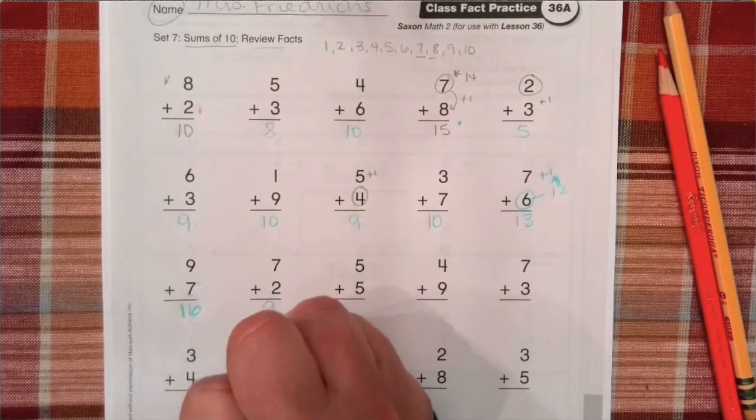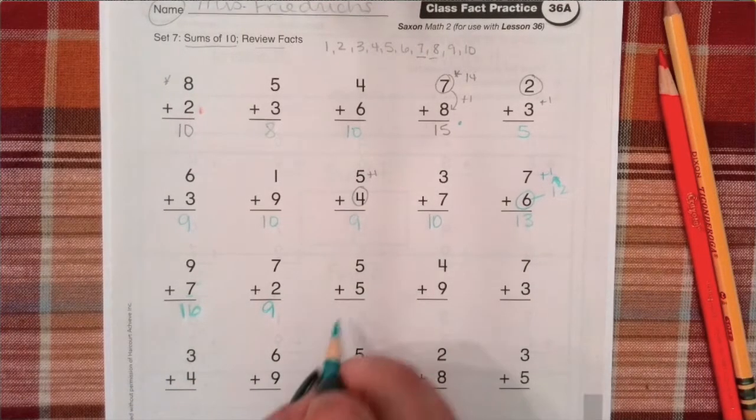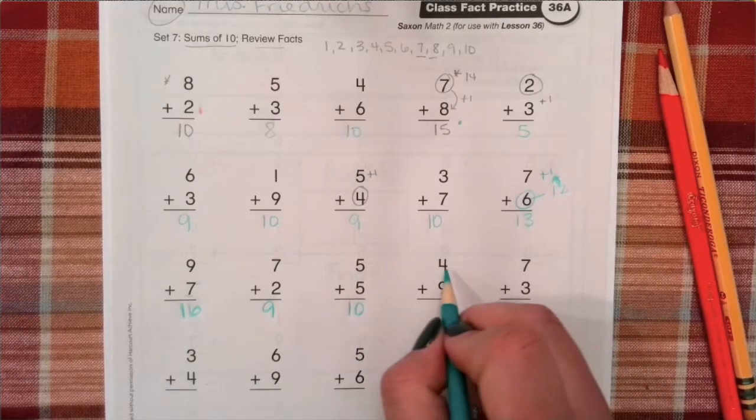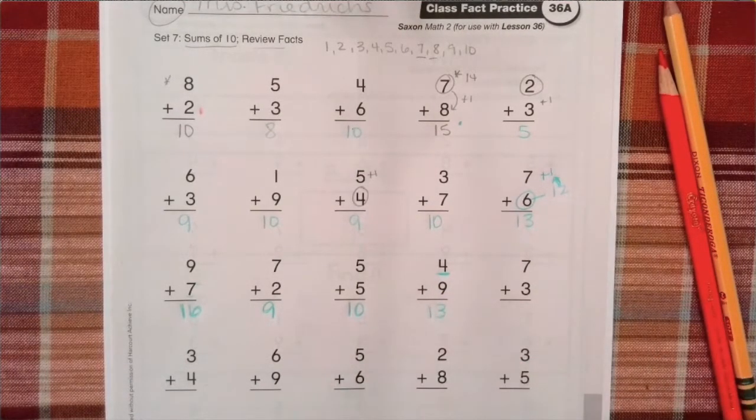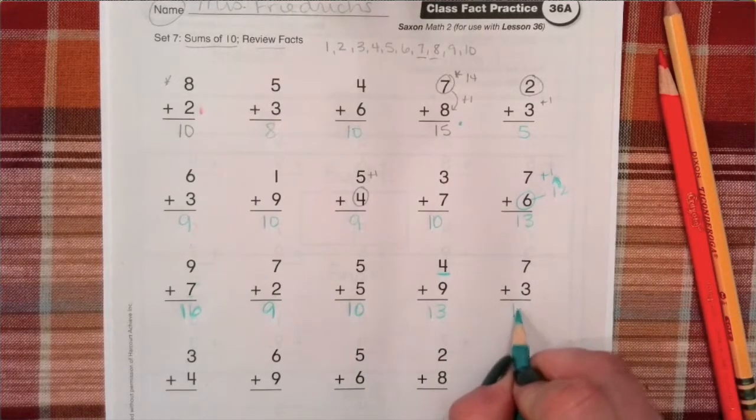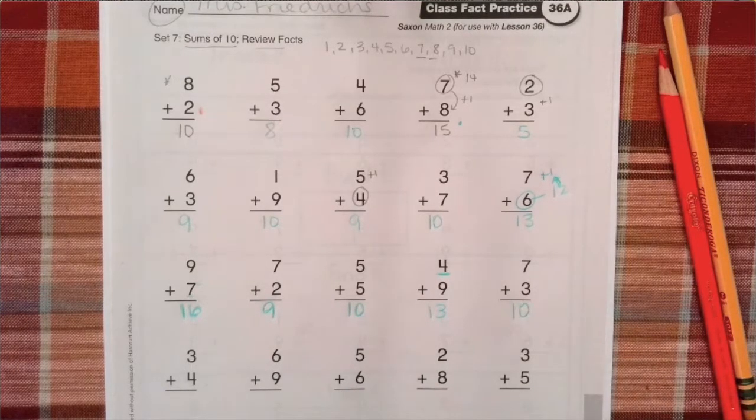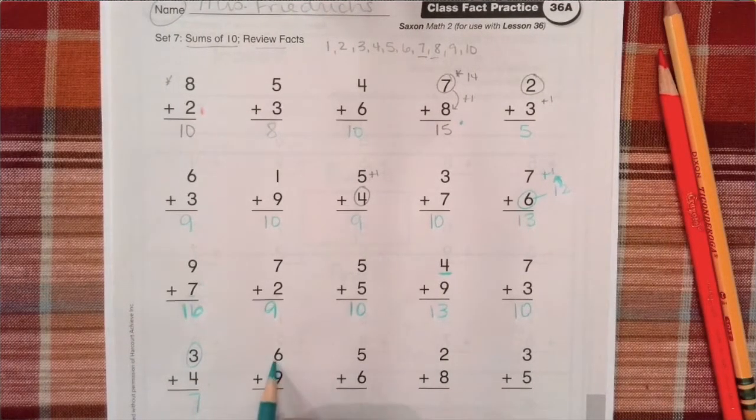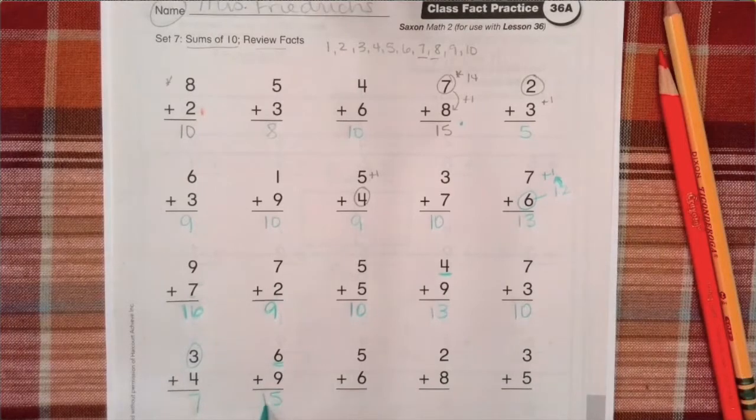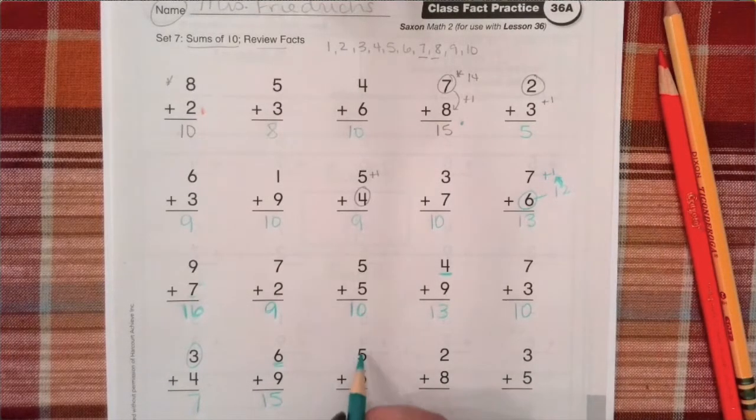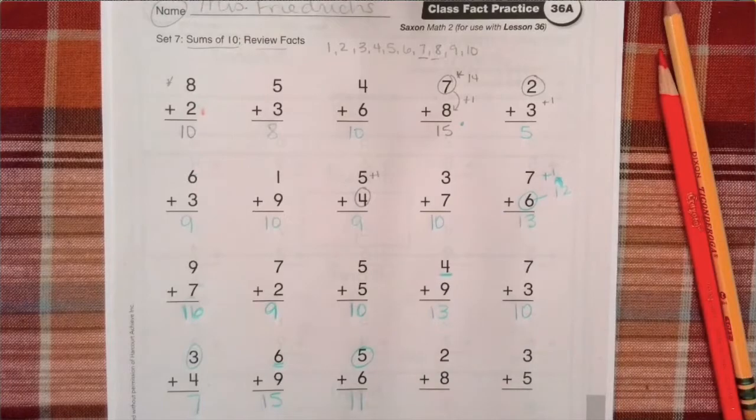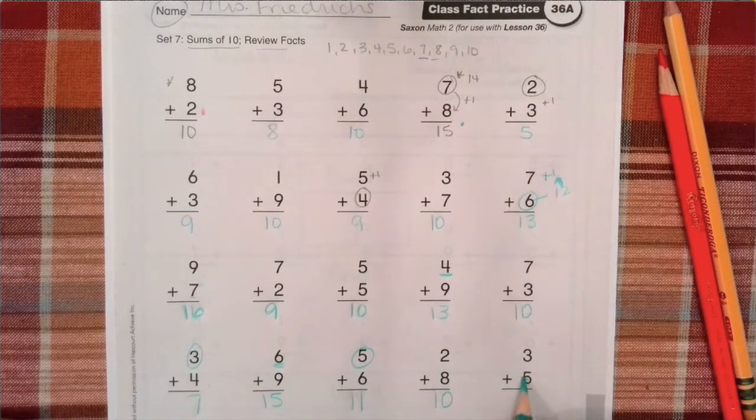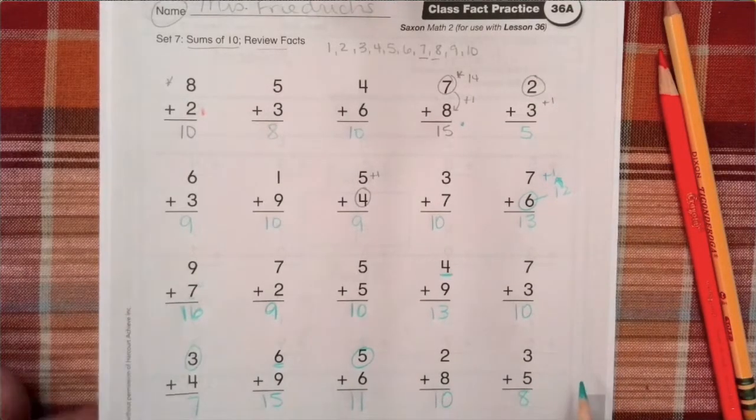Seven plus two is nine. Five plus five is ten. It's a nice double. Four plus nine is thirteen. Seven plus three is ten. Three plus four is seven. Six plus nine is fifteen. Five plus six is eleven. Two plus eight is ten. Three plus five is eight.